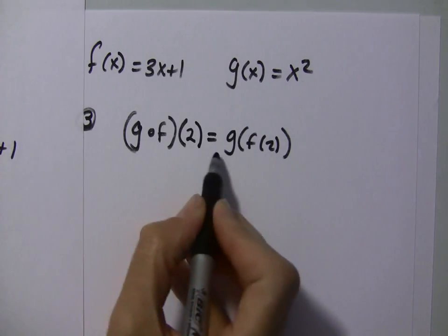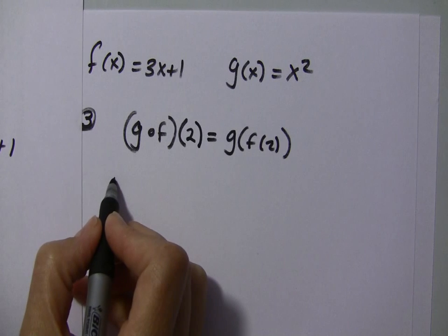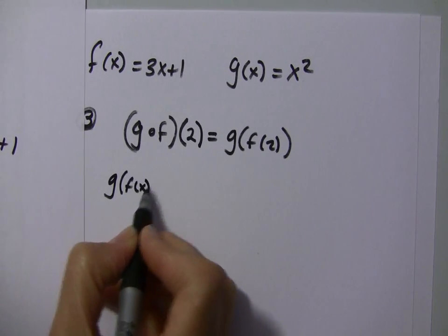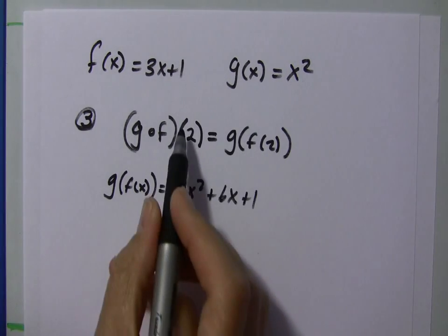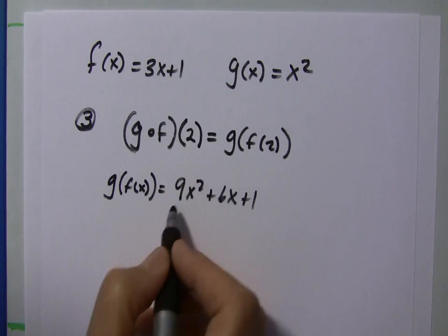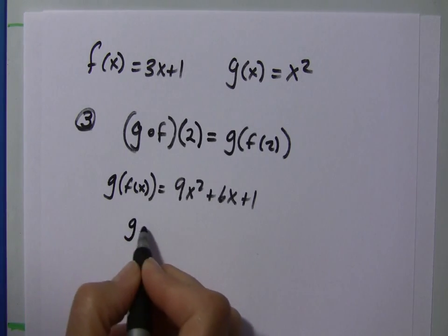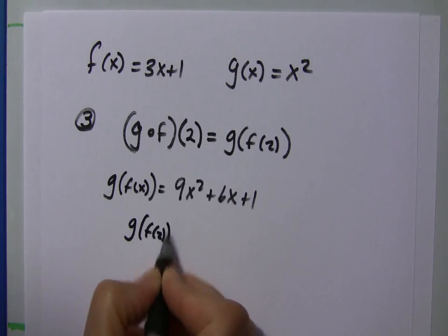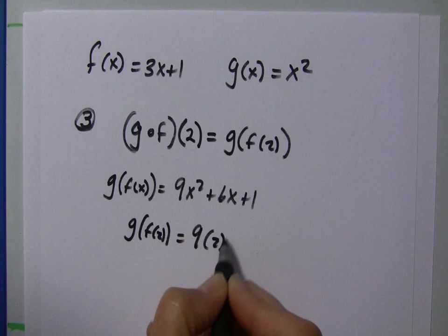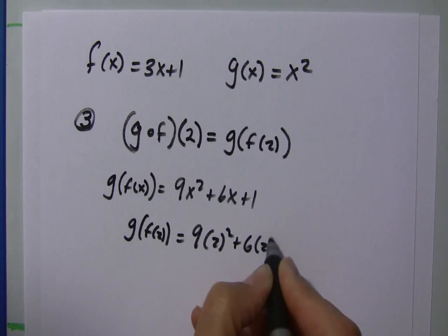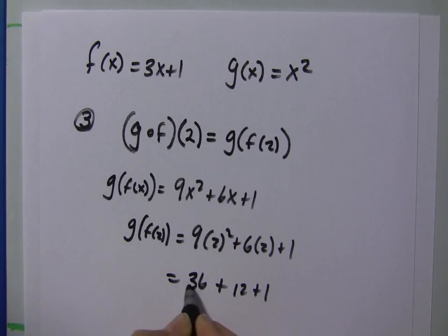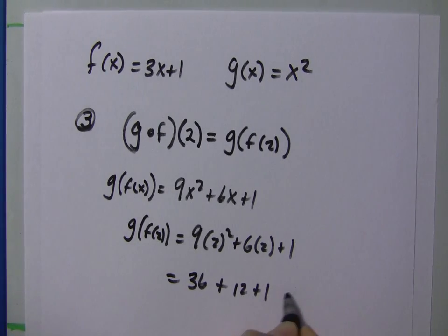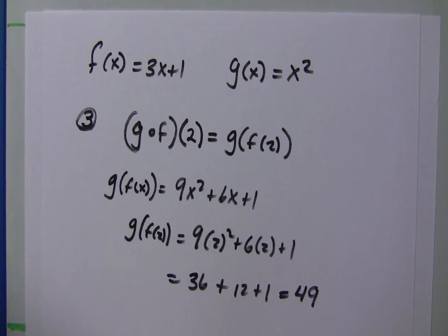We could very simply plug in 2 every time we see x here. So, since we already found g of f of x to equal 9x squared plus 6x plus 1, we can plug in 2 for every time we see x. So, this is g of f of 2, which is 9 times 2 squared plus 6 times 2 plus 1, which equals 9 times 4 is 36 plus 12 plus 1. So, 36 and 12 is 48 and 1 is 49.